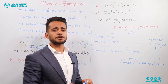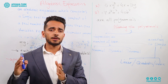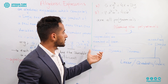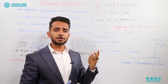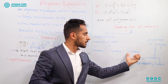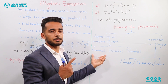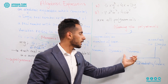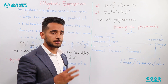Certain polynomials are given special names according to their number of terms and also according to their degrees. According to the number of terms: a monomial is a polynomial with just one term, a binomial is a polynomial with two terms, and a trinomial is a polynomial with three terms.